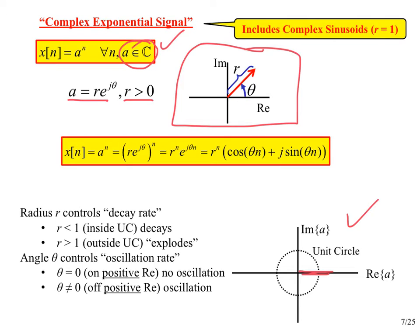When theta is not zero, A lies off the real axis, which corresponds to the case on the previous slide when A was real but negative — and we saw that caused oscillation. So R controls the decay or explosion out in front, and theta controls how fast the sinusoidal terms oscillate. These are things you should have seen before, and they will pop up over and over again in this course.